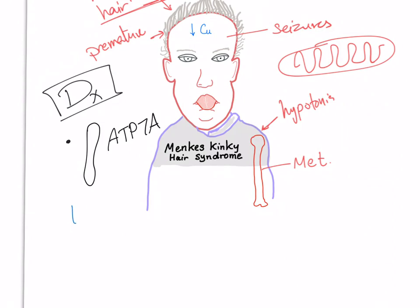There is no cure for Menke's disease — we only manage the symptoms. For example, anti-seizure medicine to treat seizures, a feeding tube if necessary, and maybe physical and occupational therapy. There is nothing more that we can do for these poor kids.